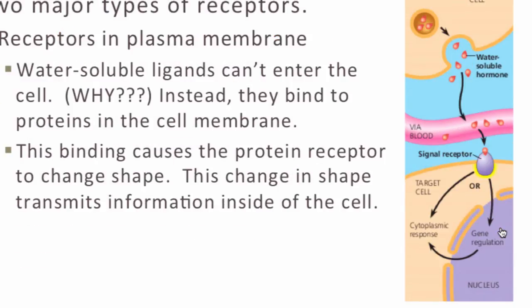The other type of receptor is embedded in the plasma membrane. Water-soluble ligands cannot enter the cell by diffusing across the phospholipid bilayer because they're polar, and the lipid tails of the phospholipids will repel them. Instead, water-soluble ligands bind to protein receptors embedded in the plasma membrane. This binding causes the receptor to change shape, and this conformational change will then trigger other changes within the cell, thereby transmitting information inside the cell.